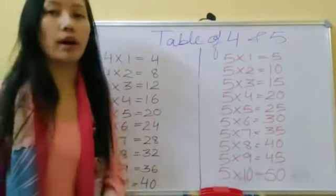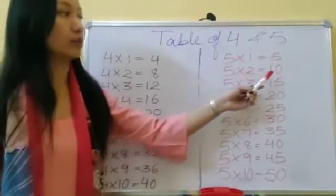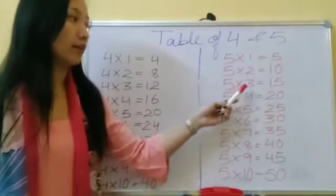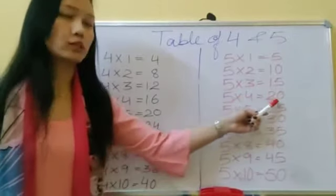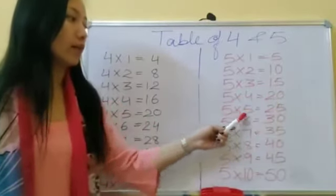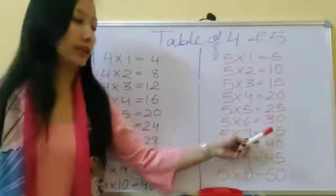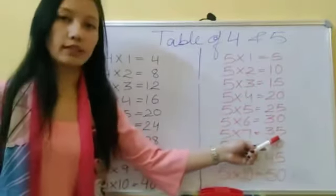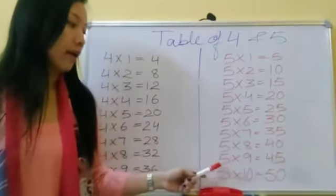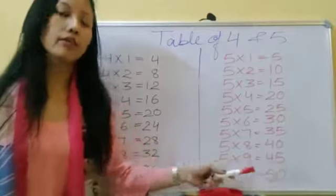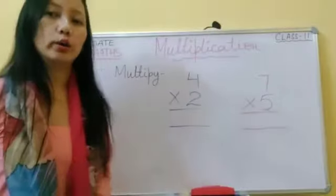Table of five: five ones are five, five twos are ten, five threes are fifteen, five fours are twenty, five fives are twenty-five, five sixes are thirty, five sevens are thirty-five, five eights are forty, five nines are forty-five, five tens are fifty.